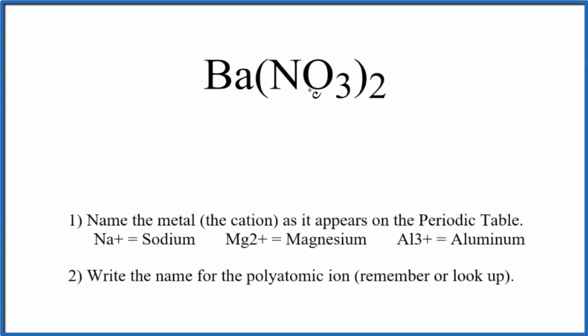To write the name for Ba(NO₃)₂, we first need to realize that we have this polyatomic ion here. This is the nitrate ion, NO₃.